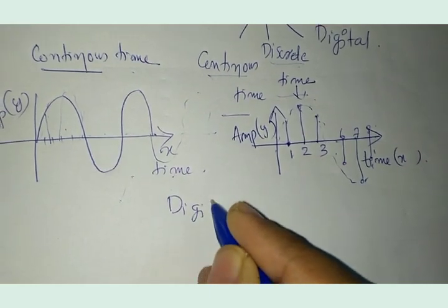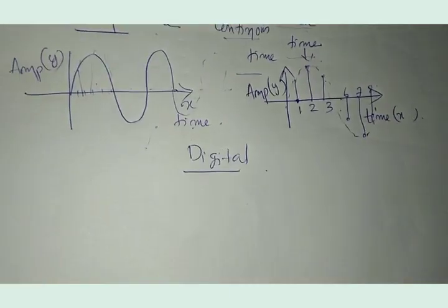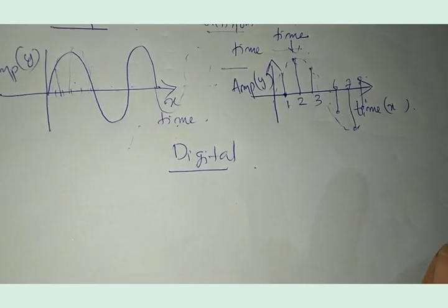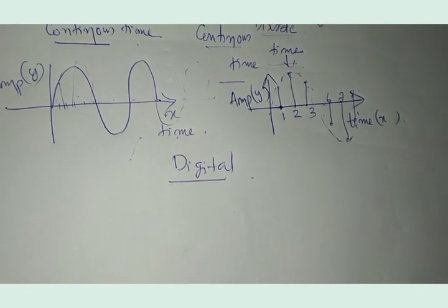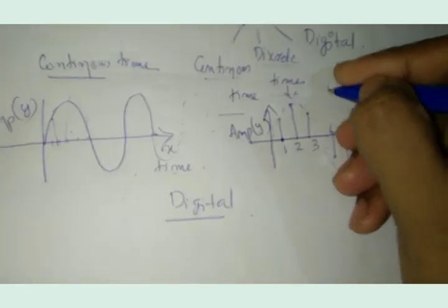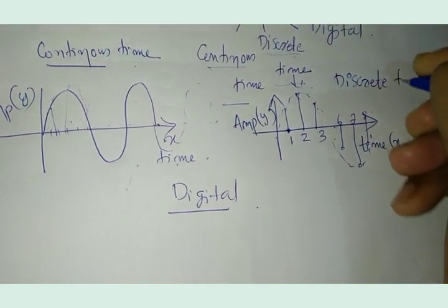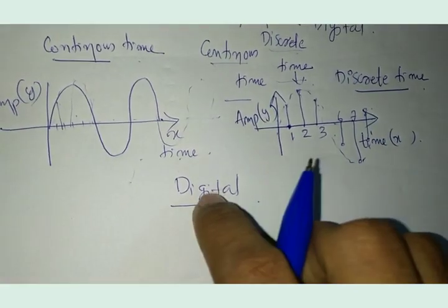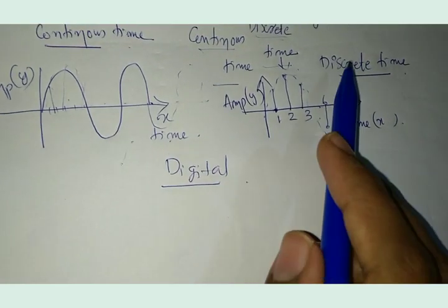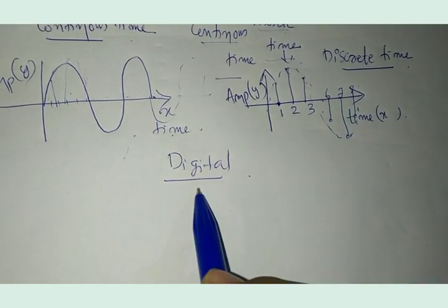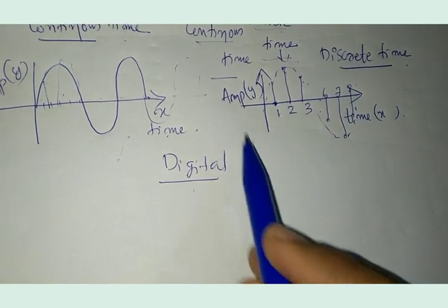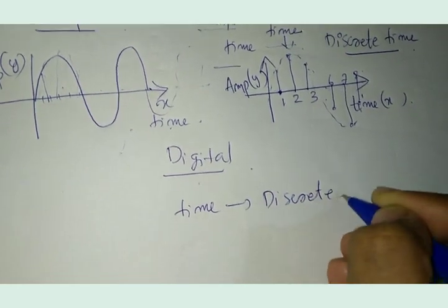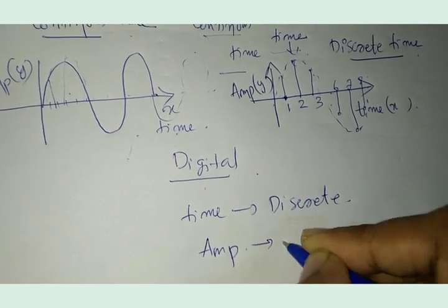What is a digital signal? We are talking about digital signal processing, so you should understand what a digital signal is. A digital signal is actually the quantized version of a discrete time signal. In the digital signal, the time is discrete and the amplitude is quantized.